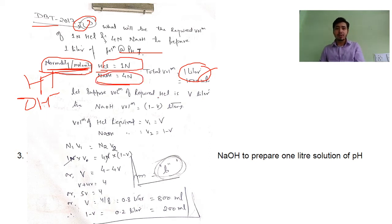Let's suppose the volume required for HCl is V liter. When you subtract V liter of HCl from 1 liter of total volume, then NaOH will be 1 minus V.